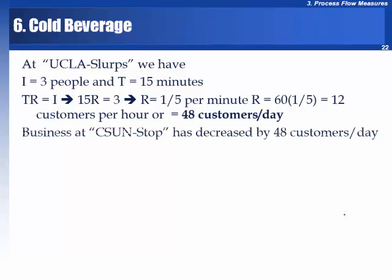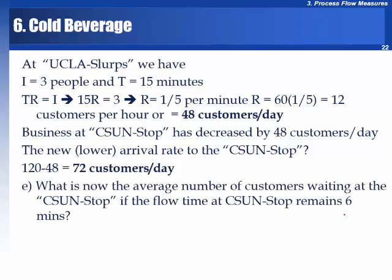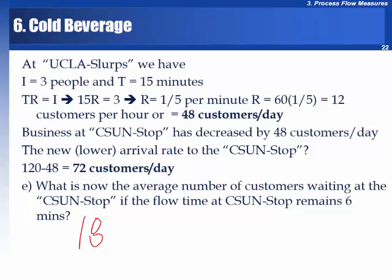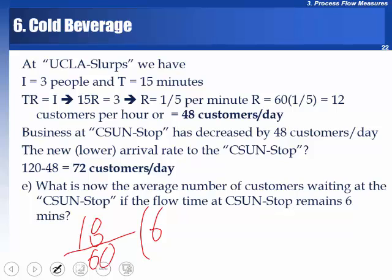Final question: how many people are waiting in the line of the old business under the new circumstances? Throughput is now 18 per hour, or 18 divided by 60 per minute. Multiplying by the original 6-minute flow time: 0.3 per minute times 6 minutes equals 1.8 people on average waiting in the line.